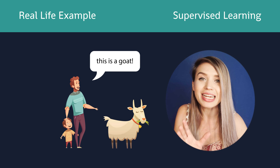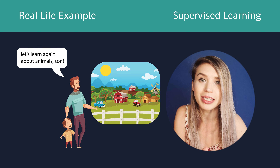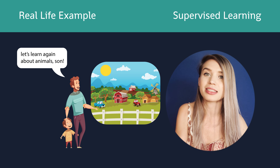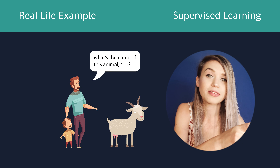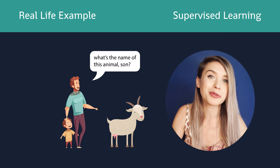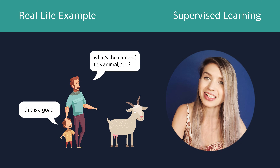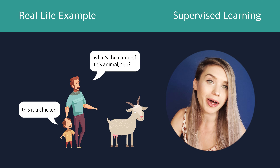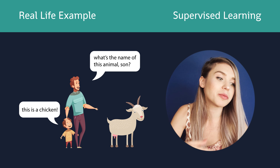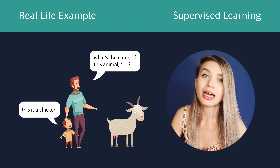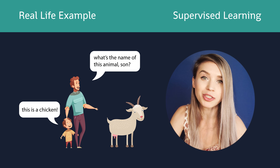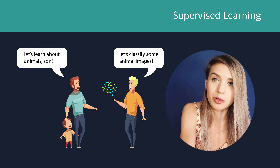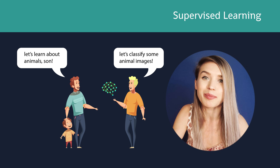This learning process may take a few visits to the farm, but eventually the parent will be able to point at any type of animal and ask his kid what animal is this. If the parent did a good job with training, his kid will give the correct answer. If the kid doesn't get it right, it either means more visits to the farm are required, or the parent didn't teach him well. This example is very similar to the relationship between a developer and a neural network that needs to learn something new.